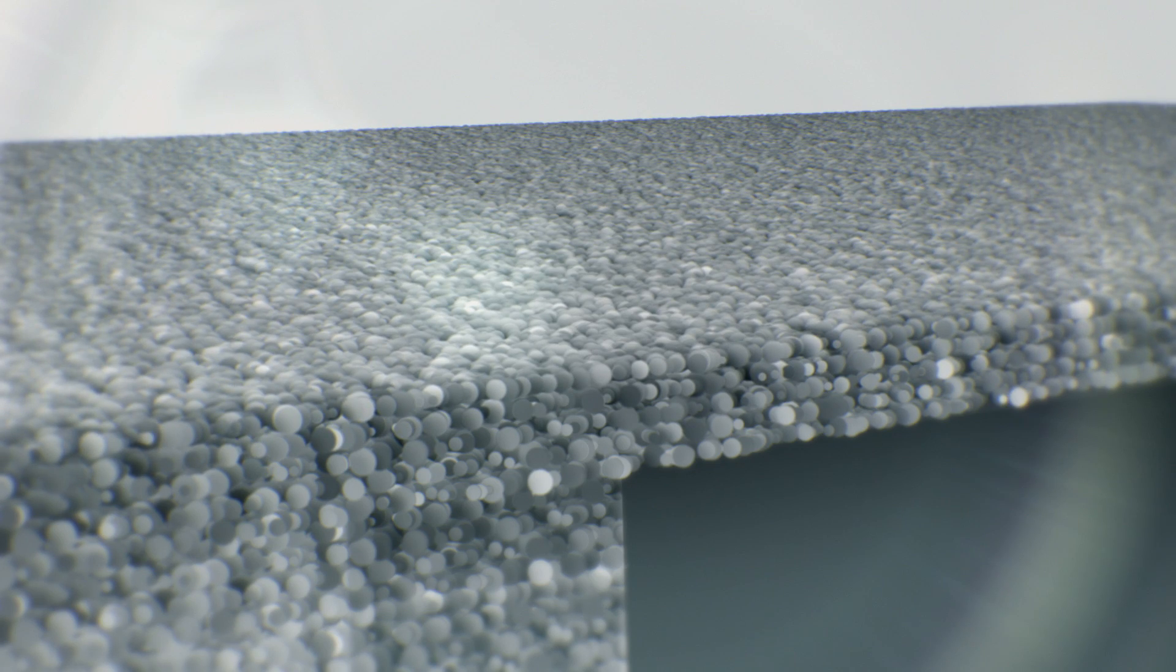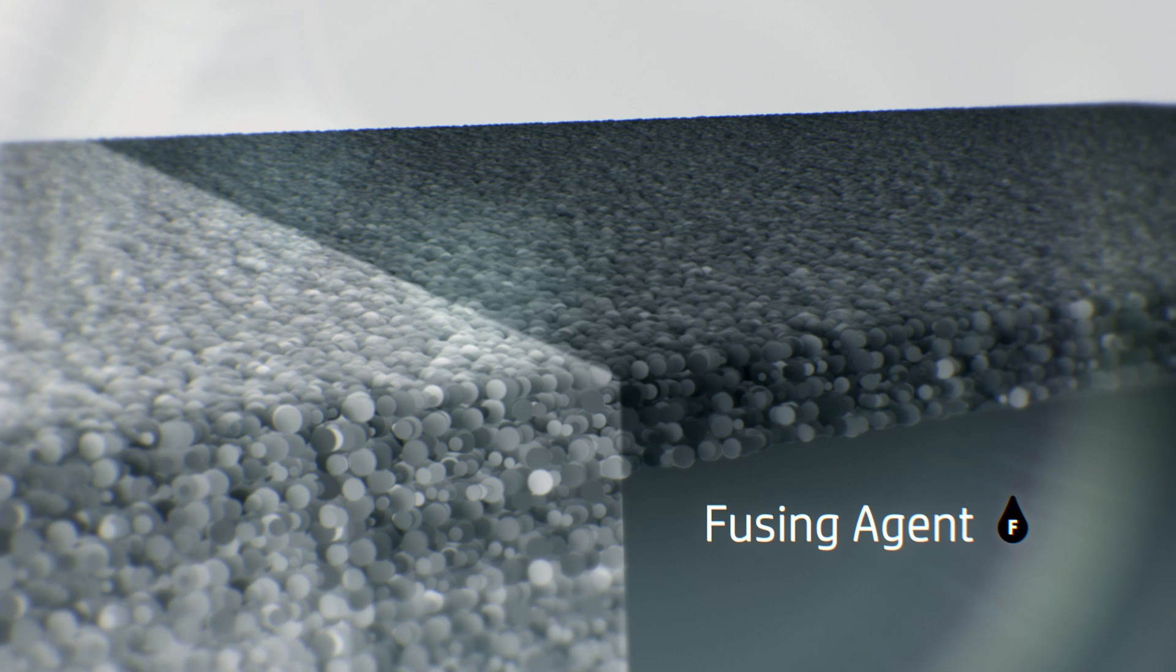In this process, a fusing agent is applied on a material layer where the particles are meant to fuse together. A detailing agent is applied to modify fusing and create fine detail and smooth surfaces.